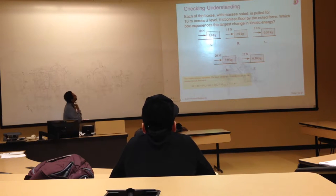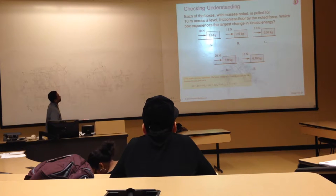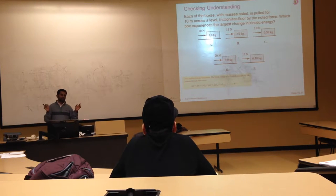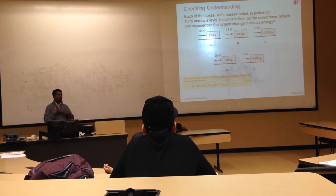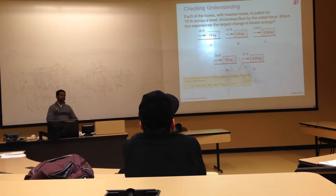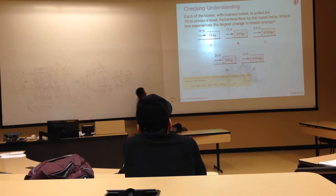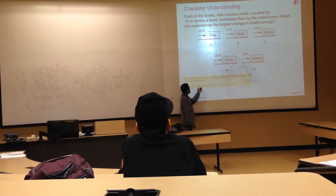Each of the boxes with a given mass is pulled 10 meters across a level frictionless floor by a horizontal force. Which box experiences the largest change in kinetic energy? The equation is not asking you to calculate any velocities, and we are not given any initial velocity. So the question is about which one is going to experience the largest change in kinetic energy. The change in energy of the system equals the work done on the system.